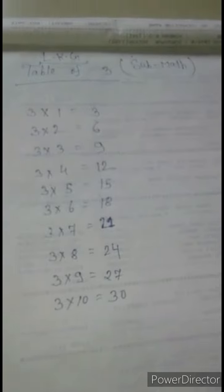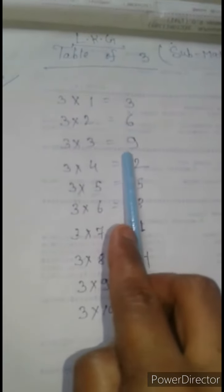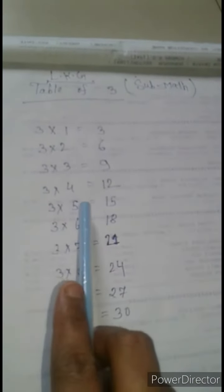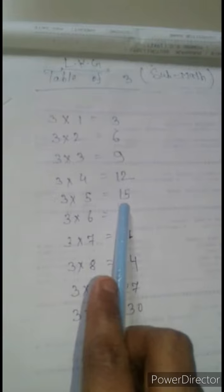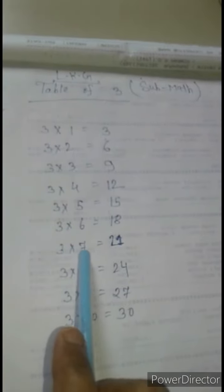Now we will memorize table of 3. 3 times 1 is 3, 3 times 2 is 6, 3 times 3 is 9, 3 times 4 is 12, 3 times 5 is 15, 3 times 6 is 18, 3 times 7